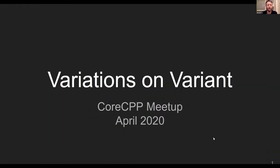Hello. Good evening. I'm one of the 50% for whom this is their first Core CPP meetup, so thank you for having me. I'm going to tell you a little bit about Variant. It's a C++ component from the STL as of C++17, but the concept has already been with us for a long time, and I will tell you about how people usually use it and a few ways that I think aren't commonly used but can be nice.